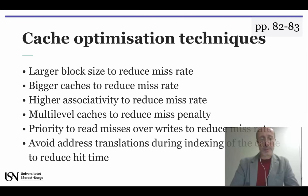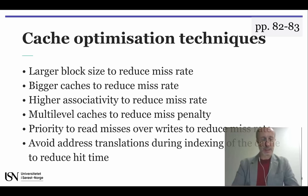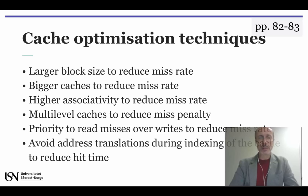The book that we are following presents two groups of cache optimization techniques called Basic and Advanced. We cannot go into much further detail in this course, so I leave you here with the six basic techniques that are described in pages 82 and 83 and in Annex B3. Please try to describe in your own words why you think that each of them can improve cache performance.